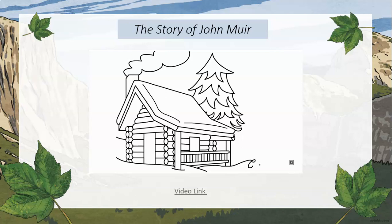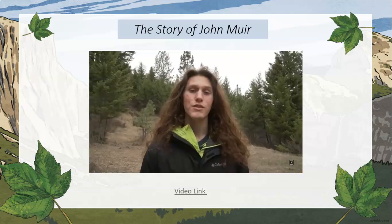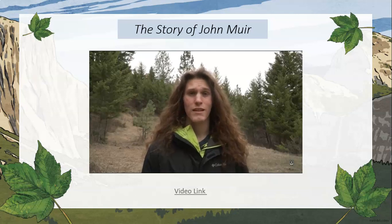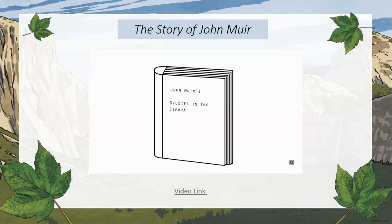After some time, in 1871, Muir discovered living glaciers in Yosemite and created a theory of the glaciation of Yosemite. This was very controversial at the time, and because of this he began to become known throughout the country. In 1874, Muir wrote a series of articles called 'Studies in the Sierra,' which launched his successful career as a writer.